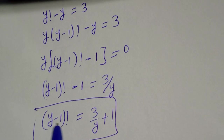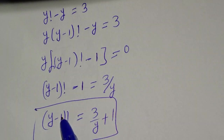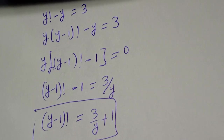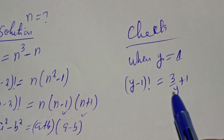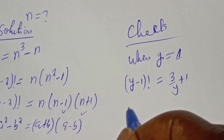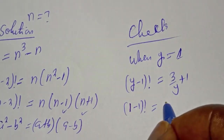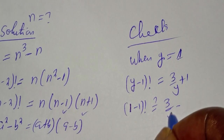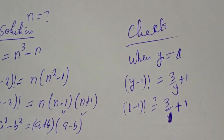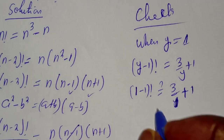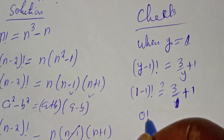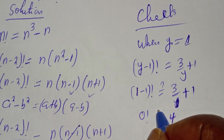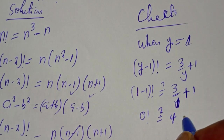Let's take this one to the other side: y minus 1 factorial is equal to 3 over y plus 1. This is the correct value of y minus 1 factorial that we want. Let's check whether the left hand side is going to equal the right hand side. Let's start with when y is equal to 1. Then we have y minus 1 factorial is equal to 3 over y plus 1. When y is 1: 1 minus 1 factorial must equal 3 over 1 plus 1. Then from here, 0 factorial is equal to 4. This must be equal to 4, and this is not possible.